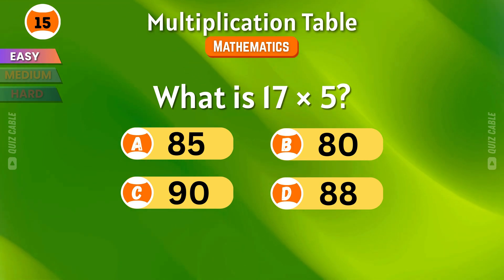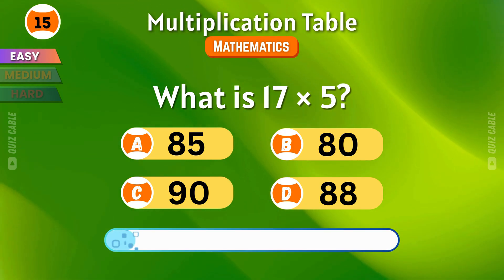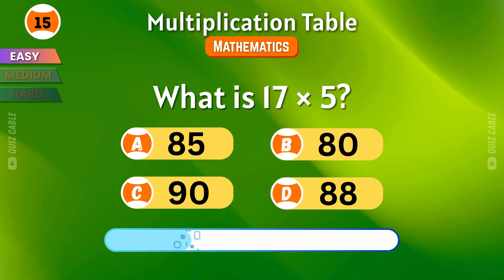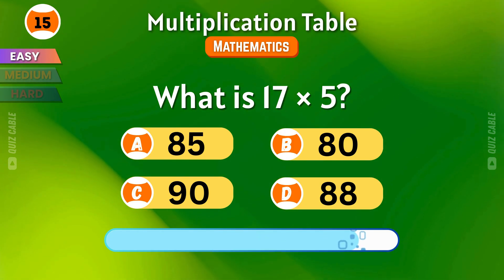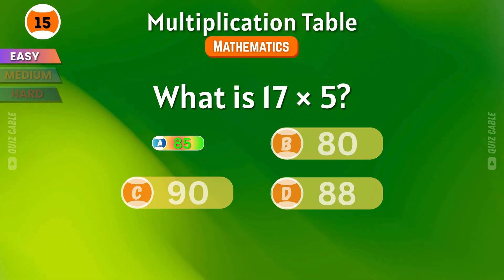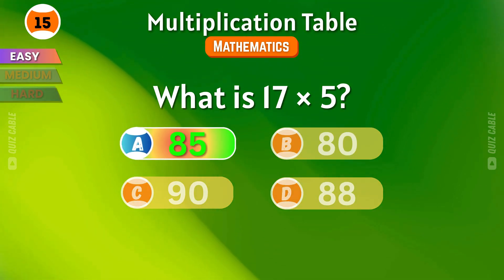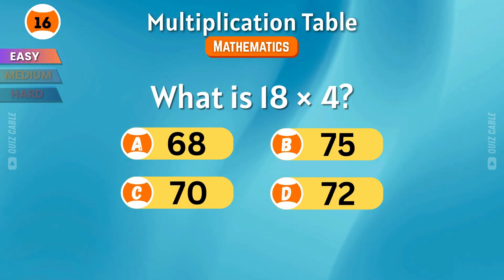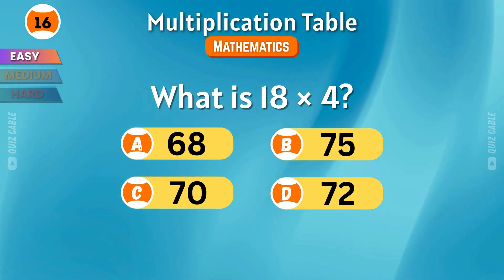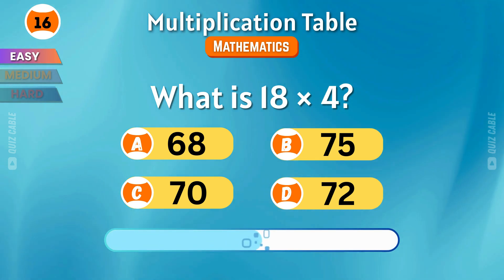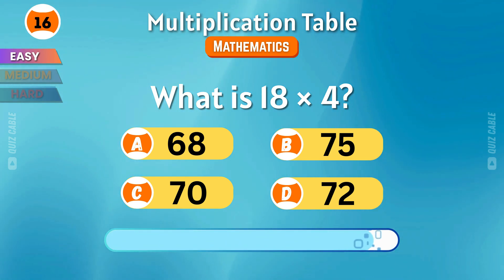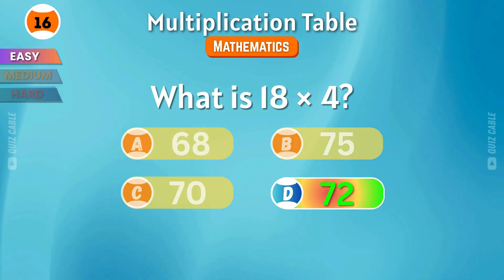What is 17 times 5? You got it — 85! What is 18 times 4? That's 72!